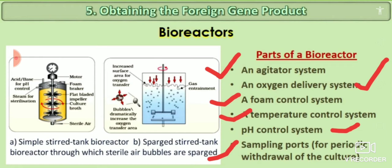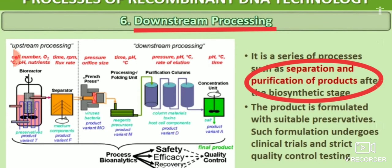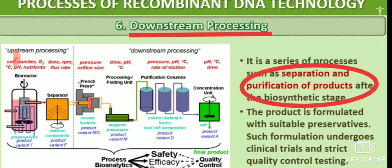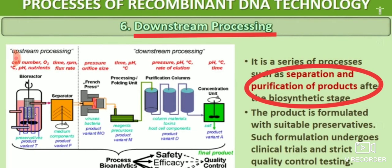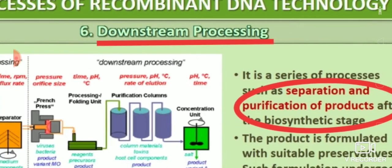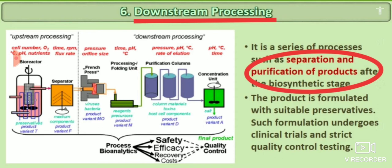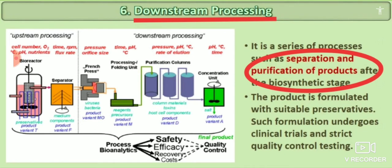The last step is downstream processing. It is the last step of the process of recombinant DNA technology. After the biosynthesis stage, before a product reaches the market, it goes through separation, purification, and preservation. These steps are collectively known as downstream processing. Any product after the biosynthetic stage requires separation, purification, and preservation before reaching the market — that is collectively known as downstream processing.